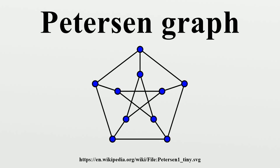The generalized Petersen graph G(n,k) is formed by connecting the vertices of a regular n-gon to the corresponding vertices of a star polygon with Schläfli symbol {n/k}. It can be formed by connecting corresponding vertices of a pentagon and five-point star, where the edges in the star connect every second vertex. The generalized Petersen graphs also include the n-prism G(n,1), the Dürer graph G(6,2), the Möbius–Kantor graph G(8,3), the dodecahedron G(10,2), the Desargues graph G(10,3), and the Nauru graph G(12,5). The Petersen family consists of the seven graphs that can be formed from the Petersen graph by zero or more applications of Δ-Y or Y-Δ transforms. The complete graph K6 is also in the Petersen family. These graphs form the forbidden minors for linklessly embeddable graphs — graphs that can be embedded into three-dimensional space such that no two cycles are linked.